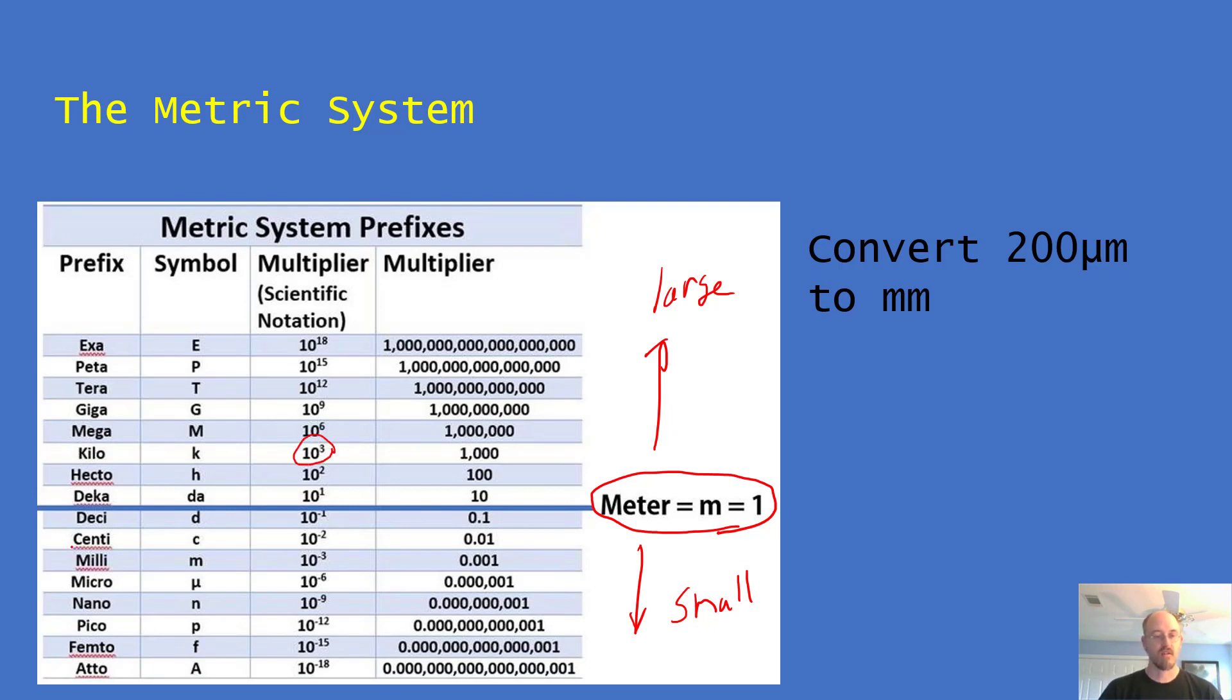But going smaller, we're going to often see these in this textbook especially. So going down, we will hear about centimeters. That's a hundredth of a meter, 10 to the negative two. We'll hear about millimeters, which are a thousandth of a meter. So there are a thousand millimeters in one meter. Micrometers, like the image I showed you before, it has this symbol here that looks like a U shape.